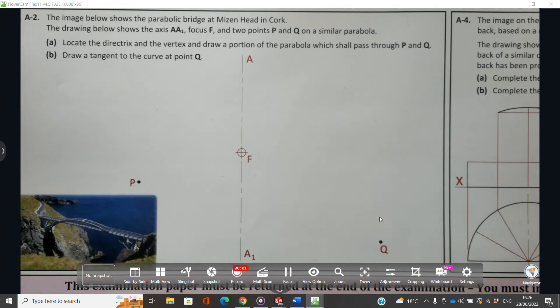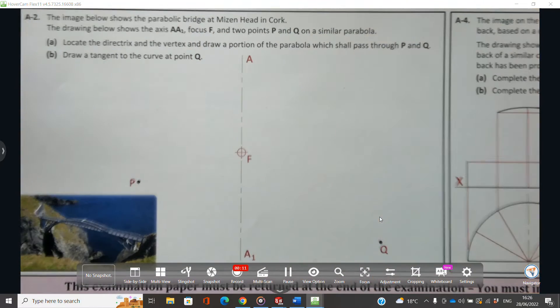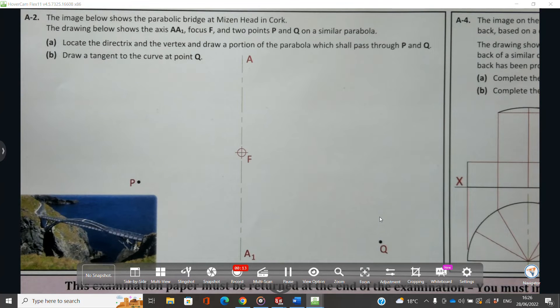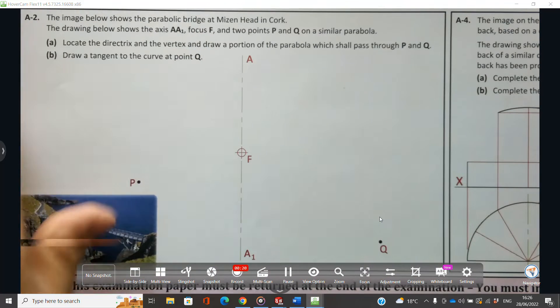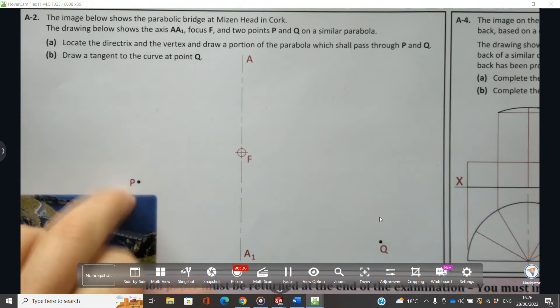Okay, so welcome to the 2022 exam here on DCG, question A2. We've got the parabolic bridge at Mizen Head. The drawing shows axis AA1, focus F, and two points P and Q on a similar parabola. Part A: locate the directrix and vertex and draw a portion of the parabola which shall pass through P and Q.